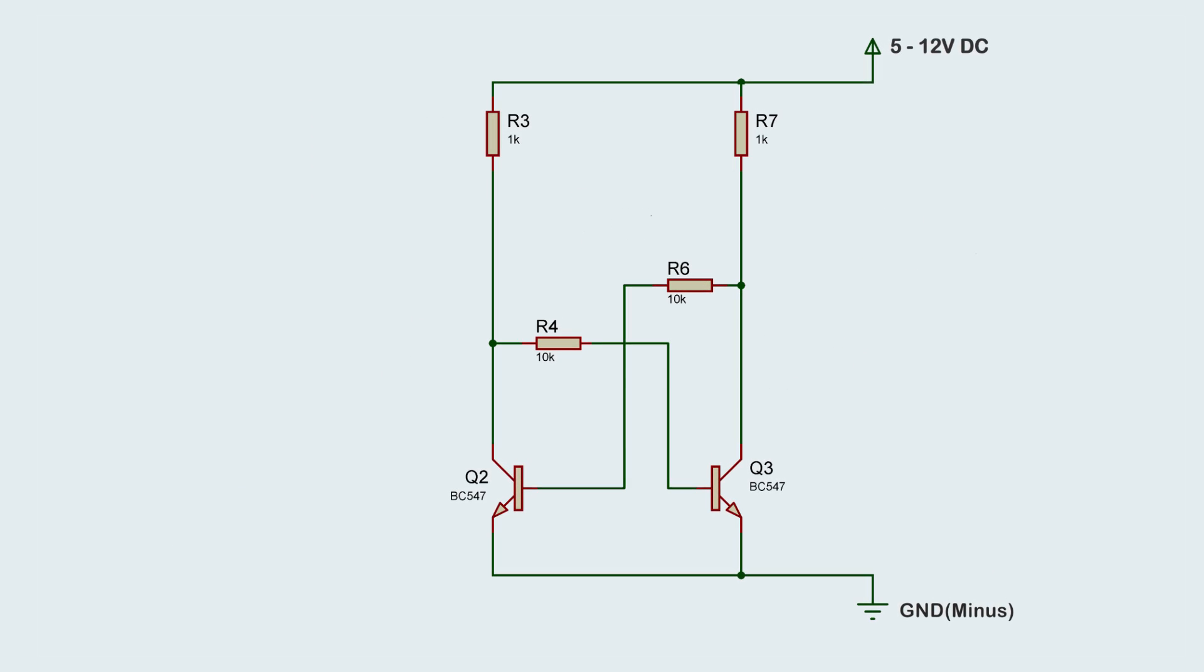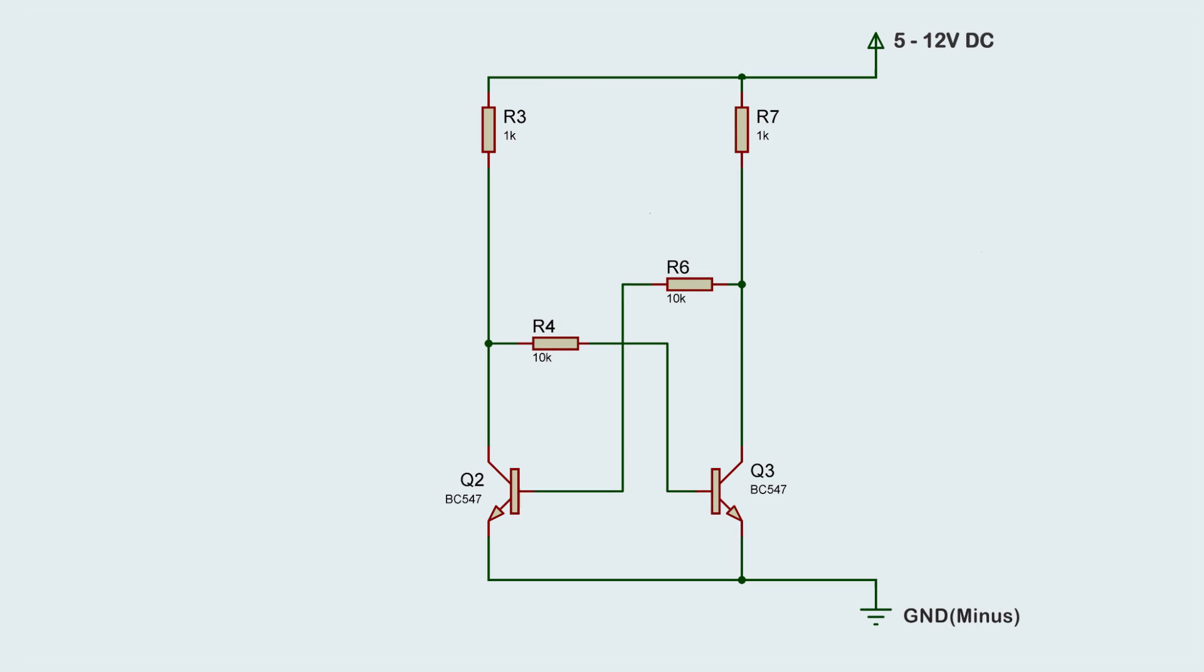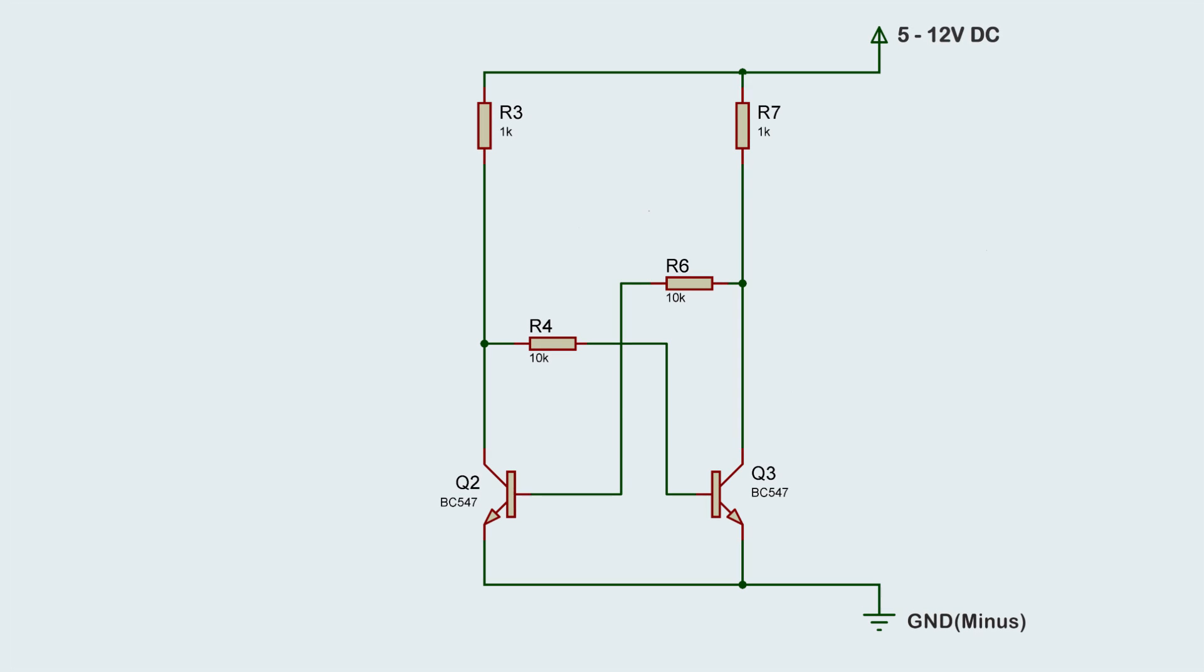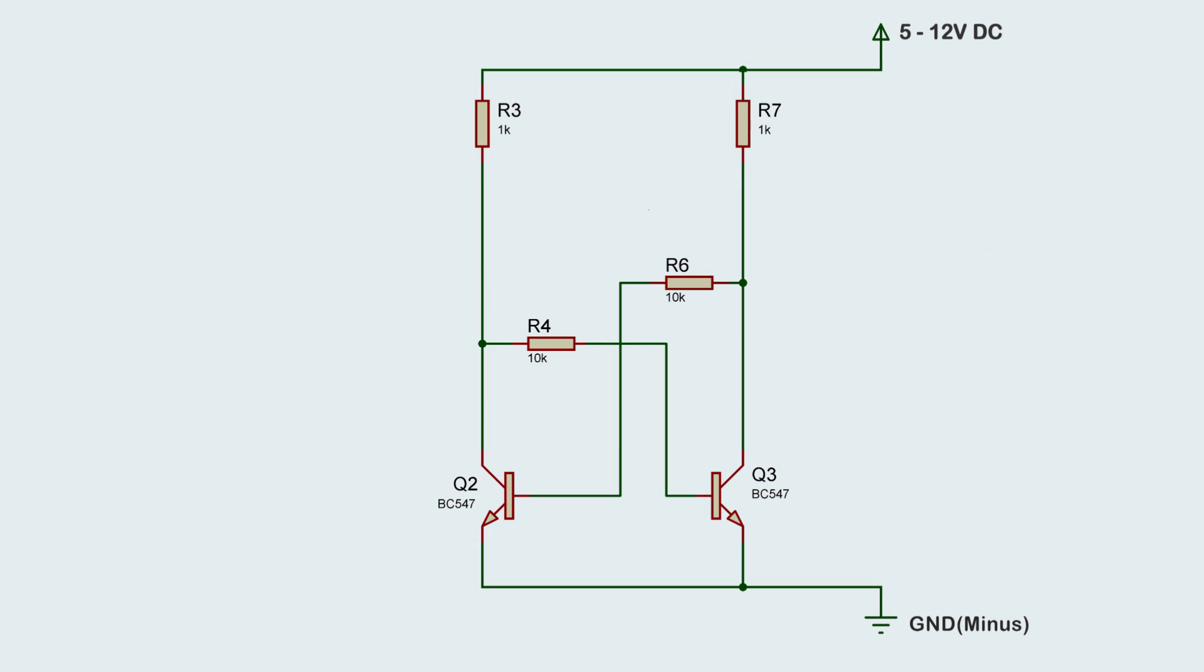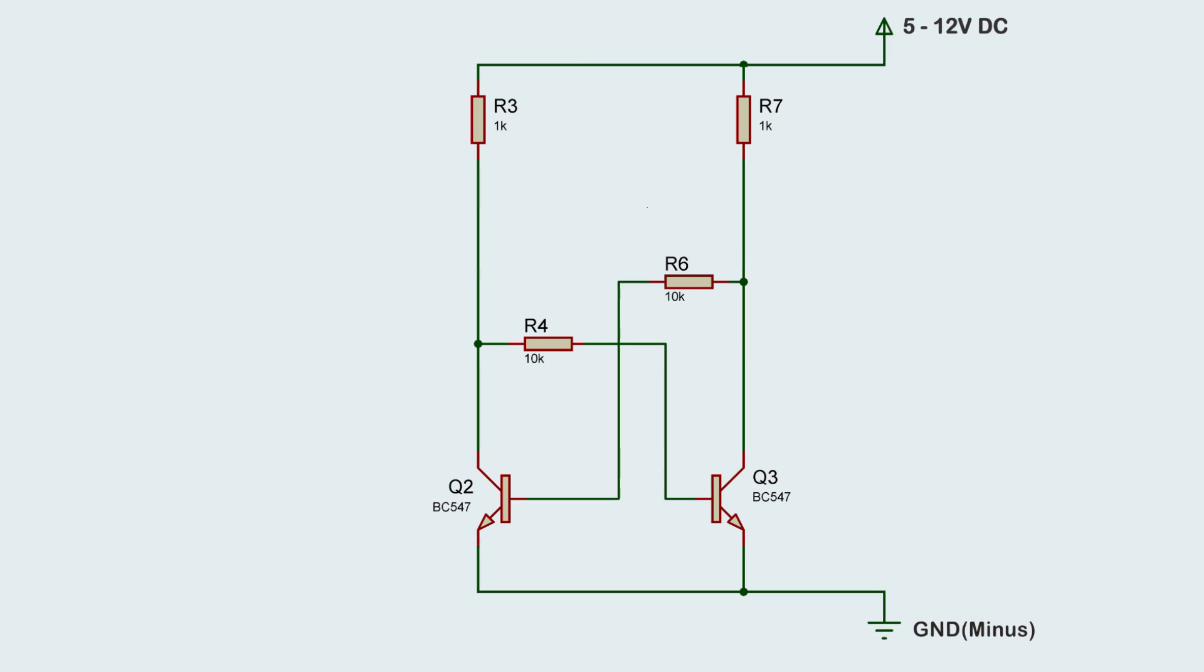This part of the circuit has some memory. Maybe word memory is too strong in our case, because it only remembers one bit of the information, 1 or 0. In our case it will only remember whether the alarm was triggered or not.